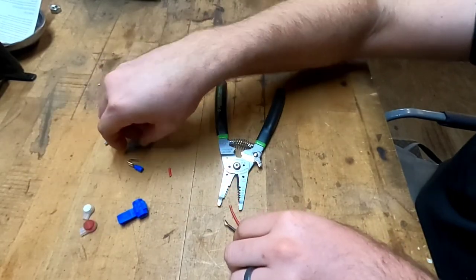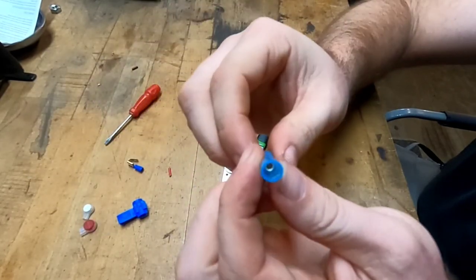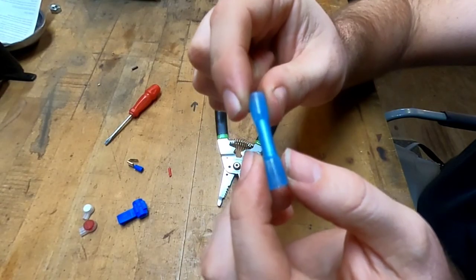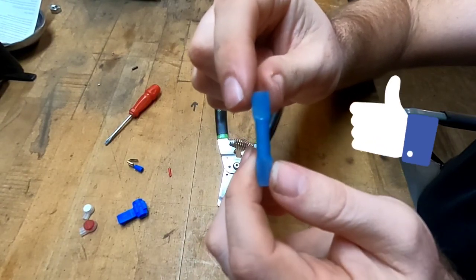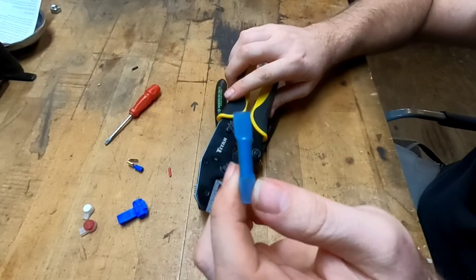So those are for small wires. The best way is to use your standard heat shrink butt splice, right? With your insulated crimpers.